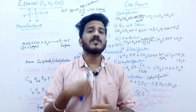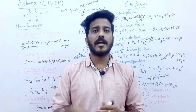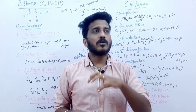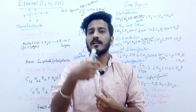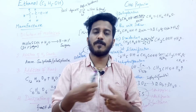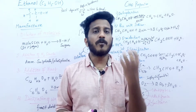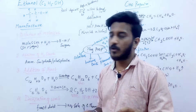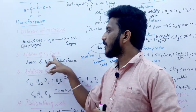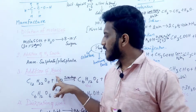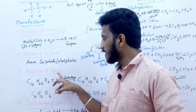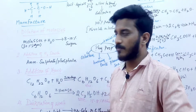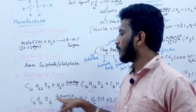We then add a nitrogen source to support microbial growth — ammonium sulfate or ammonium phosphate is added. Next, we add yeast, which is a microorganism. Yeast contains two enzymes: Invertase and Zymase, which carry out the fermentation process.